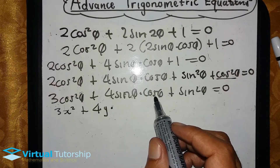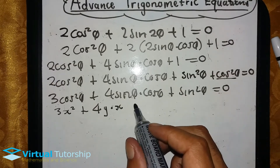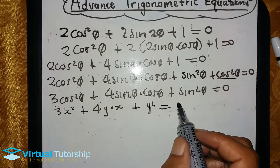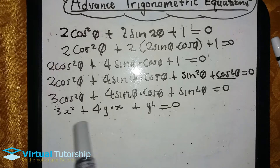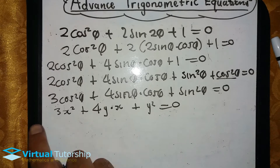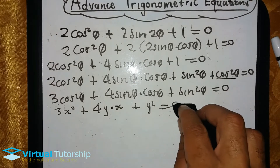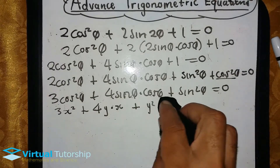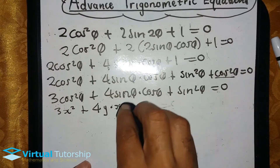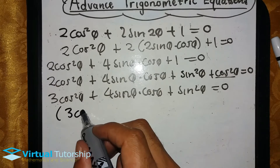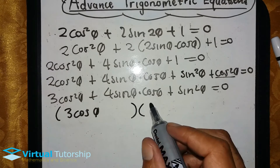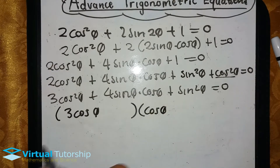If we let cosθ be x and sinθ be y, this expression looks like a trinomial — it looks familiar for factorization. The leading coefficient is 3, and the last term is 1, so this is a trinomial we can factorize. Factorizing it gives us (3cosθ + sinθ)(cosθ + sinθ).